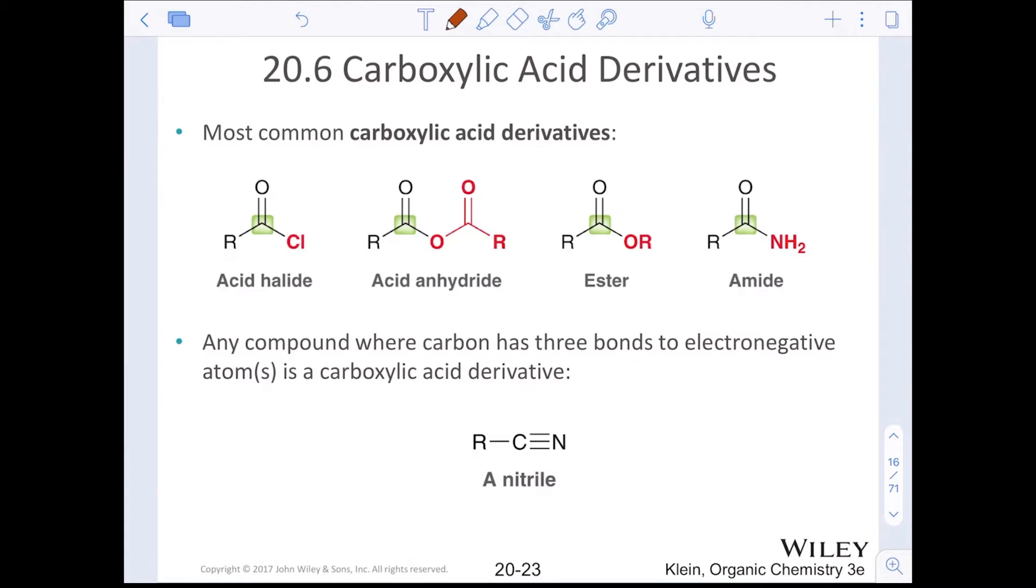All right, carboxylic acid derivatives. We learned about reactions of carboxylic acids in terms of how to prepare and reduce them. The carboxylic acid derivatives are where we'll spend the rest of our time. Looking at the acid halide, also called the acyl chloride, the acid anhydride with oxygen sandwiched between two carbonyl groups, the ester and the amide. Any compound where carbon has three bonds to electronegative atoms—chlorines, oxygens, nitrogens—is called a carboxylic acid derivative. Even a nitrile is technically a carboxylic acid derivative. It reacts very similarly to the carboxylic acid.